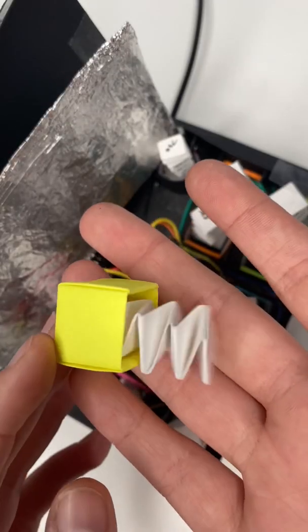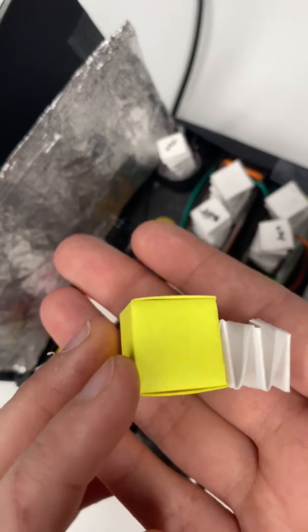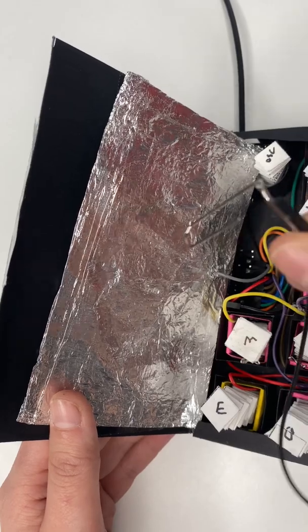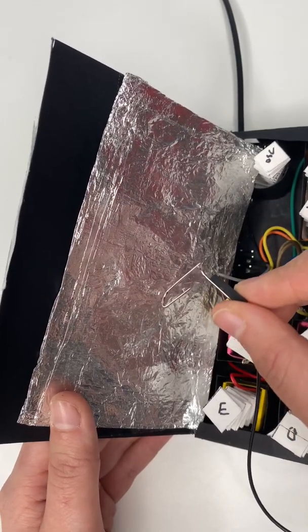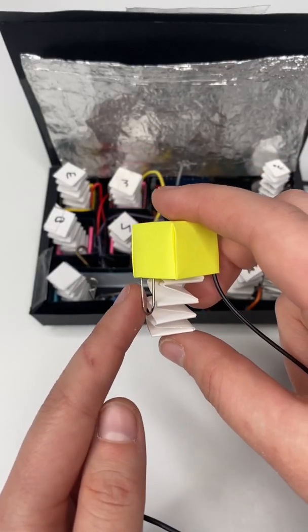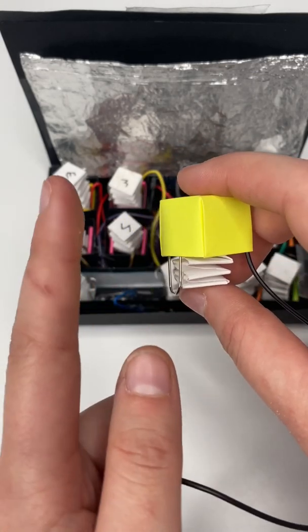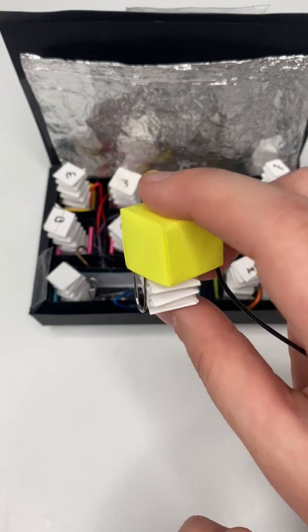Now each button is spring loaded, but that alone isn't going to tell the computer that the button is being pressed. But if we have some kind of conductive surface and a wire that's also connected to the microcontroller, then we can tell when the button's being pressed. So knowing that, if we have a paper clip that's shorter than the spring itself, when we press the button, the paper clip will touch the aluminum foil and that's how the computer will know that the button has been pressed.